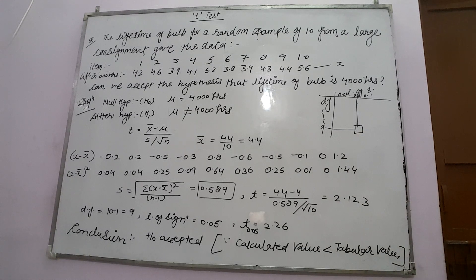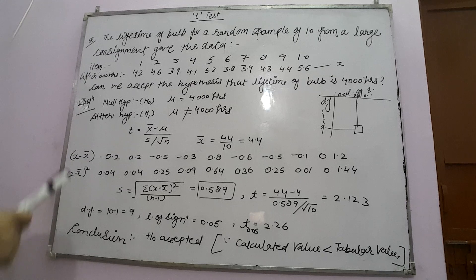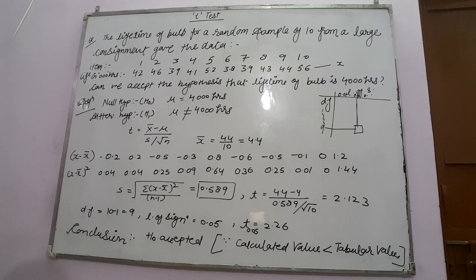If the calculated value of T is less than the tabular value of T, then we accept the hypothesis — meaning the lifetime of the bulb is 4000 hours. We accept the hypothesis because the calculated value is less than the tabular value. However, if the calculated value is greater than the tabular value, we reject the hypothesis, meaning the lifetime of the bulb is not equal to 4000 hours.